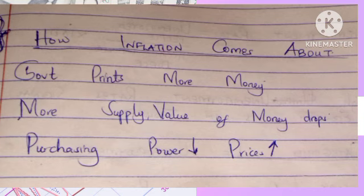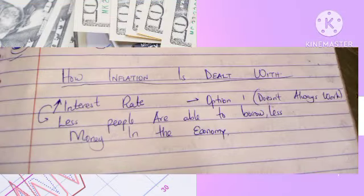Lastly, we are going to look at how the government deals with inflation. One of the ways in which the government deals with inflation is by raising the interest rate. When the interest rate is raised, it means fewer people have the ability and willingness to borrow, which eventually results in less money in the economy, thus helping to check the inflation.